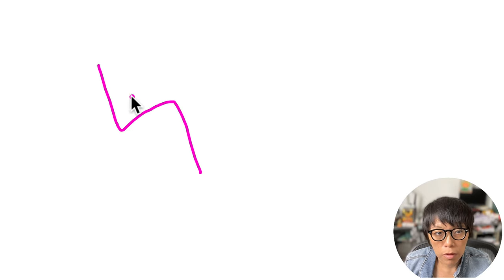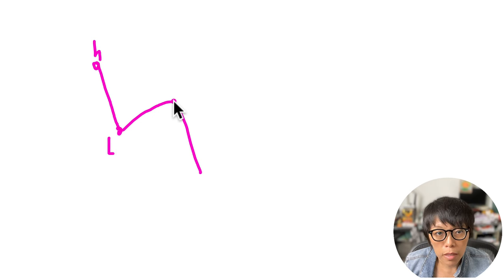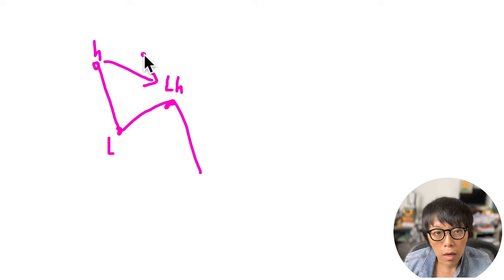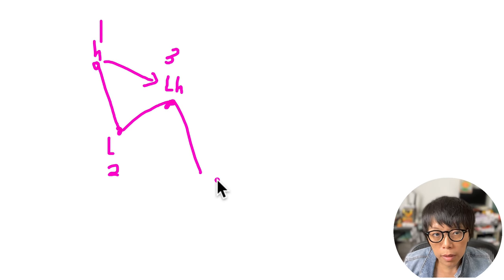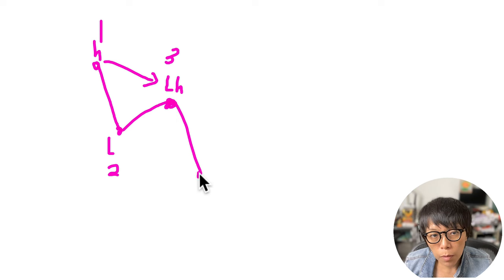First, we need four points. Let's say we have a reference point which is a price high, and then the next point is a low. Then the next time price moves up, it must make a high, but this high is lower than the previous high. So we have the third point. The first two points become reference points — one and two. In order to complete and confirm this downtrend, we need four points and the last point must be a low which is lower than the previous low.